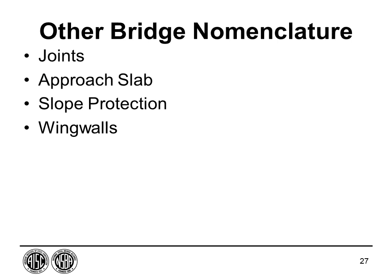Other bridge elements include joints, which allow for movement that occurs in a structure; approach slabs, which provide a transition from the roadway to the bridge; slope protection, which can be rip-rap or concrete and armors the slopes surrounding the in-bents; and wing walls, part of the abutment that retain fill in the slope transition area.